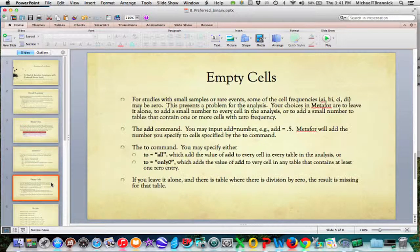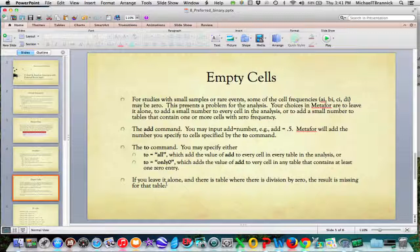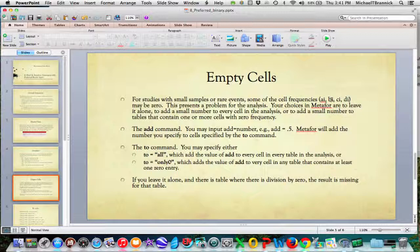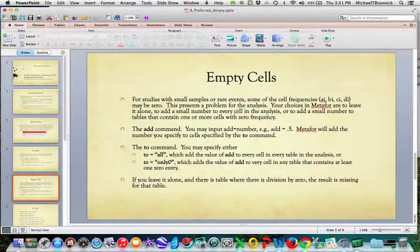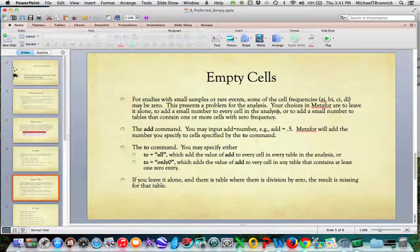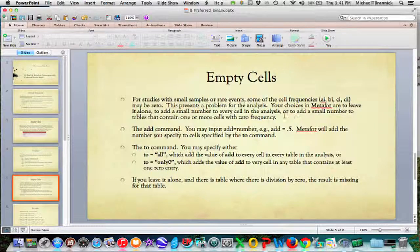A common problem in binary tables is empty cells. If you have small numbers of people in your studies or if you're dealing with very rare events, then some of your cells can have zeros. That's particularly nasty if B or D has zeros in it because you wind up dividing by zero, which causes a problem. So you have choices about that in Metaphor. You can leave it alone, add a small number to every cell in the analysis, or add a small number to the tables—the four cells—that contain one or more cells with zero frequency.